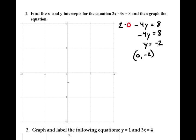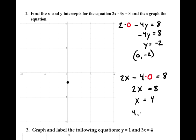For the x-intercept, we plug in 0 for y: 2x minus 4 times 0 equals 8. Since 4 times 0 is 0, we have 2x equals 8. Dividing both sides by 2 gives x equals 4. So x is 4 when y is 0 — that's our x-intercept at positive 4 on the x-axis.